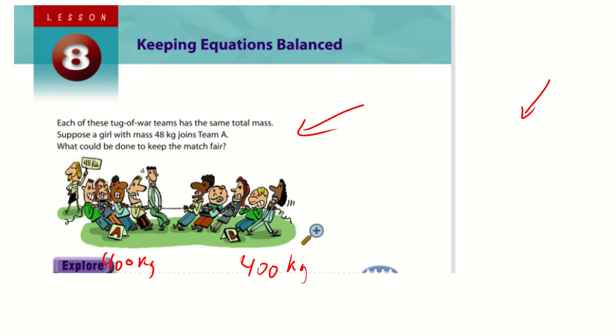Now suppose a girl with the mass of 48 kilograms joins team A. So if we add 48, we're going to have 448 now here. Well, what would happen first off? Because this one has more mass, they're probably going to win, taking into account mass, not strength. Now what could be done to keep the match fair? Well if we have 448 kilograms now here and we added 48, we have to do the exact same on this side. We're going to get 48 kilograms. So now we've kept it fair by going 448 kilograms.